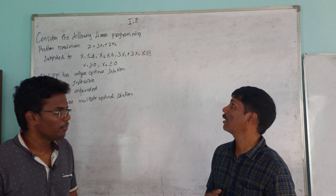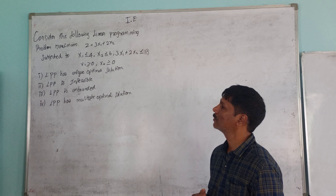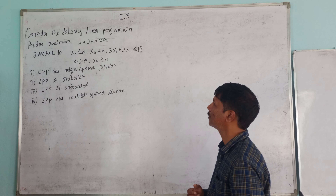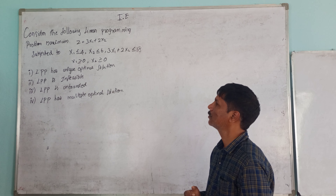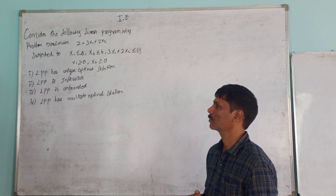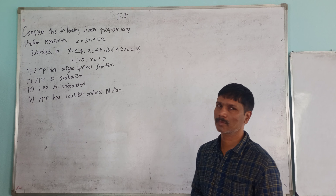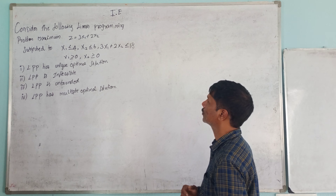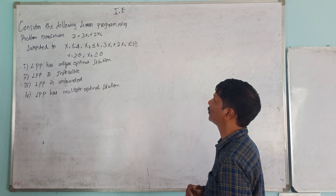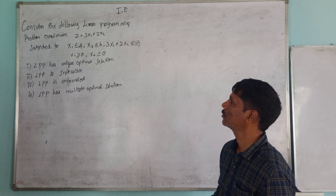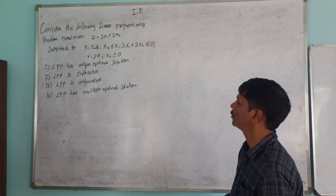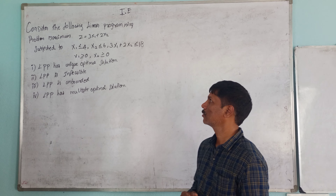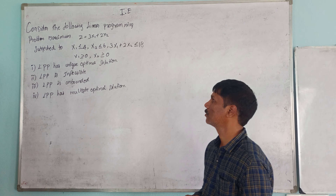In Operations Research, there is a linear programming problem we can talk about. Consider the following linear programming problem: Maximize Z = 3x1 + 2x2, subjected to x1 less than or equal to 4, x2 less than or equal to 6, 3x1 plus 2x2 less than or equal to 18, x1 greater than or equal to 0, x2 greater than or equal to 0.